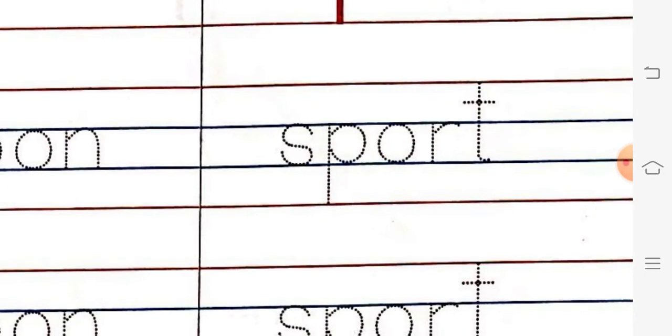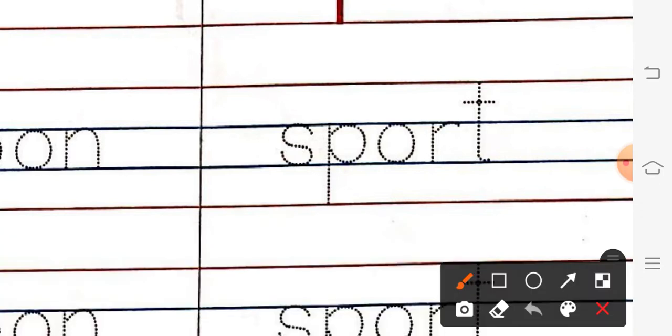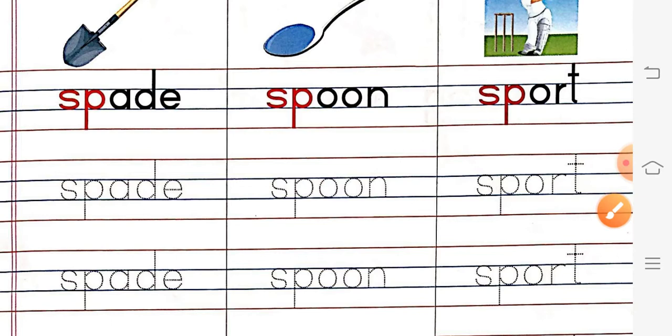And then, come to the third one. That is our sport. So, S, P, O, R, T. Sport. What is this? Sport. So, let us revise.